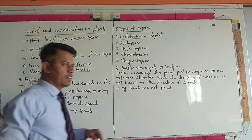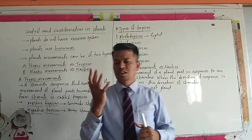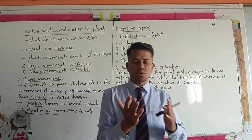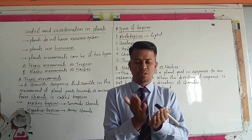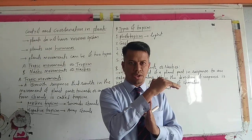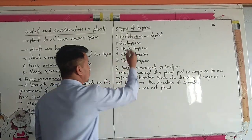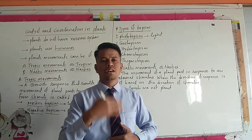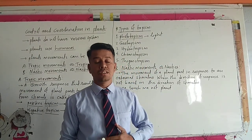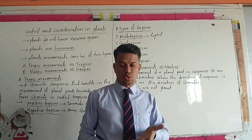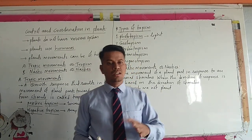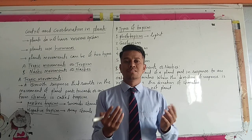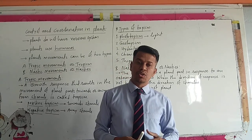For example, sunflower always shows its face towards the sunlight. Plants showing bending towards the light are examples of phototropism. The growth of the shoot towards light is positive phototropism, and the growth or movement of roots away from light is negative phototropism.